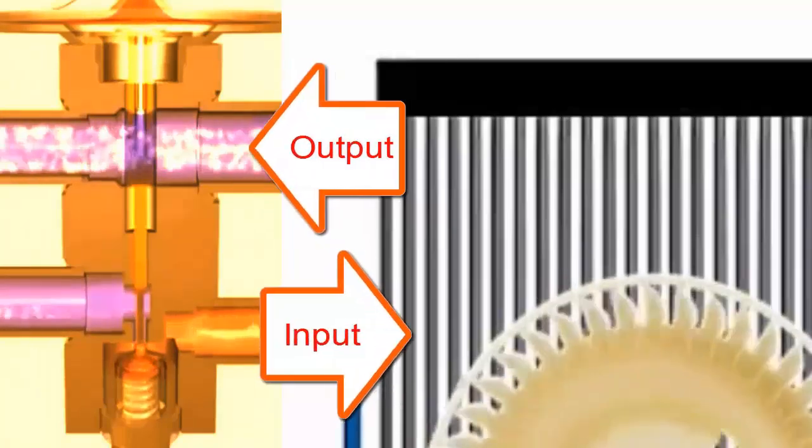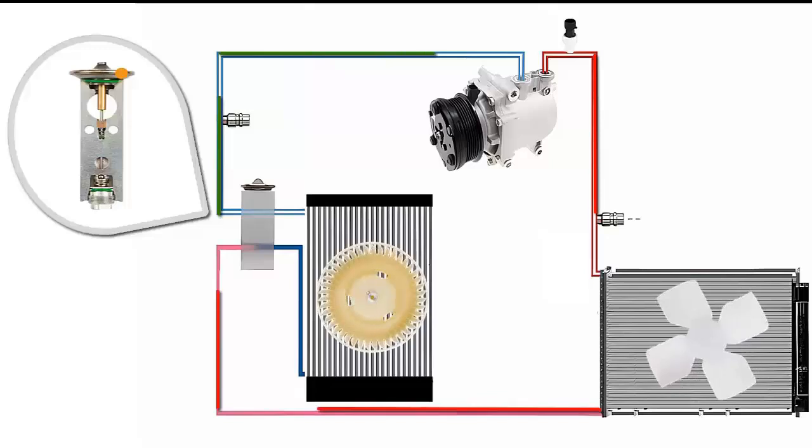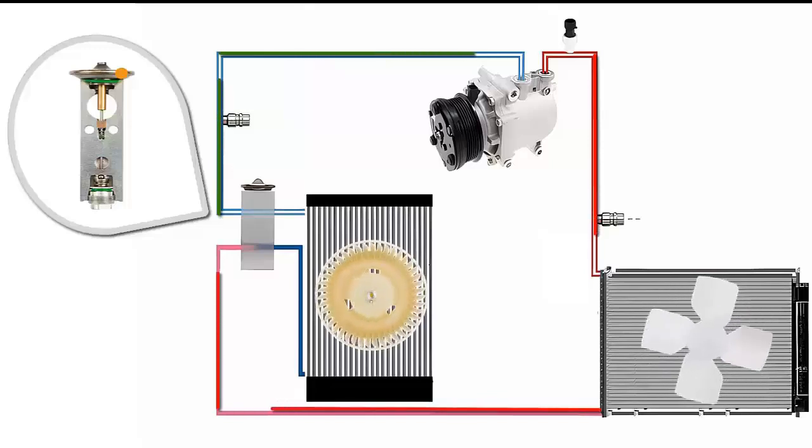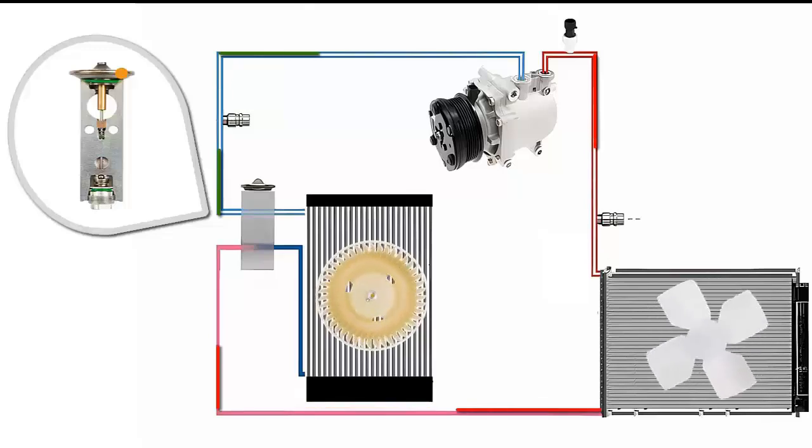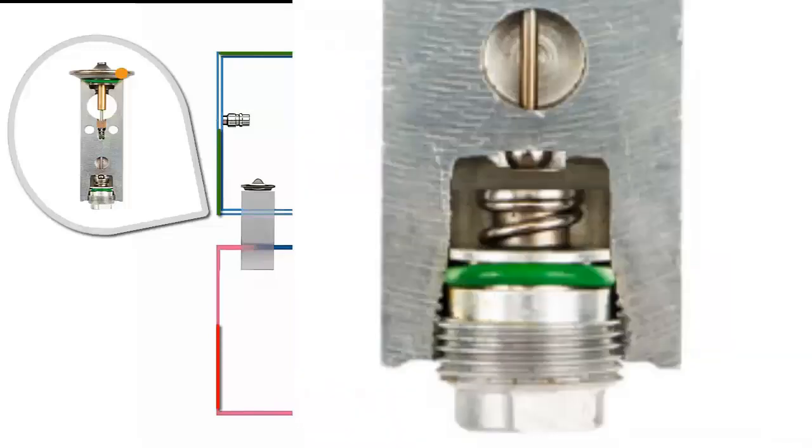Symptoms of a faulty block expansion valve: Intermittent or insufficient cooling. A defective valve can become stuck in open or closed positions, causing inconsistent cooling in the cabin, especially during long trips or temperature changes.